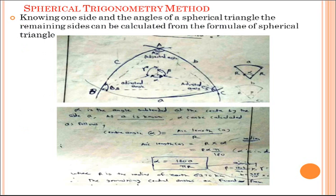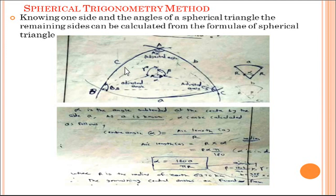Spherical trigonometry method: knowing one side and the angles of the spherical triangle, the remaining sides can be calculated from the formulas of spherical trigonometry. Let A be the known side, and let A, B, and C be the adjusted spherical triangle sides. Let α, β, and γ be the central angles subtended by arcs A, B, and C respectively. The central angle α can be calculated as: arc length divided by R, since arc length = R × α, giving α = 180A / (πR).